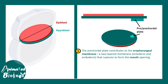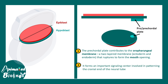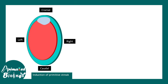The precordial plate contributes to the oropharyngeal membrane, a two-layered membrane that would eventually be ruptured to give rise to the mouth opening. This precordial plate also works as an important signaling center, which is crucial for neural tube formation.